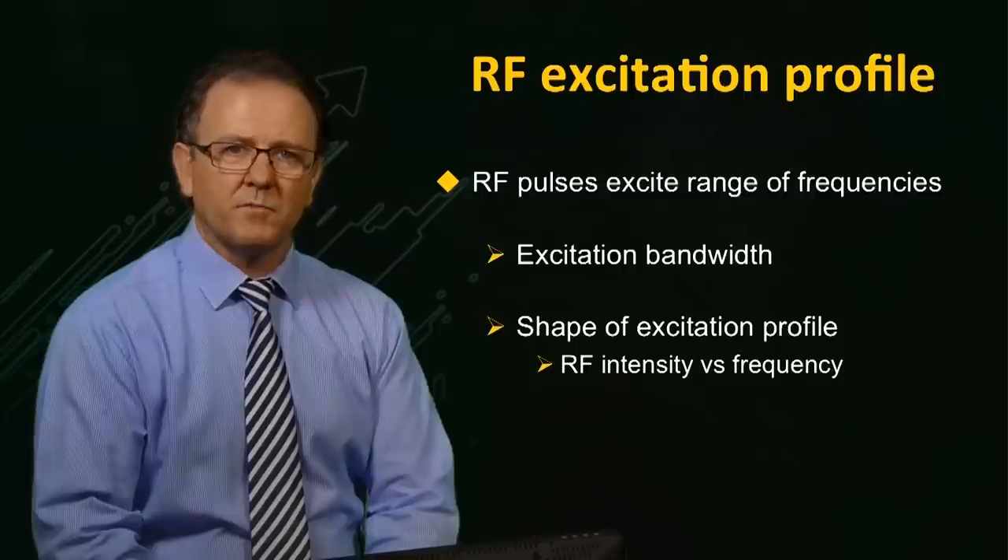So an RF pulse is able to excite a broad envelope of frequencies, and the width of this envelope is known as the excitation bandwidth of the pulse. This envelope of frequencies has a shape defined by the RF intensity as a function of frequency. It turns out that the shape of this excitation profile is represented approximately by the Fourier transformation of the RF pulse envelope waveform.